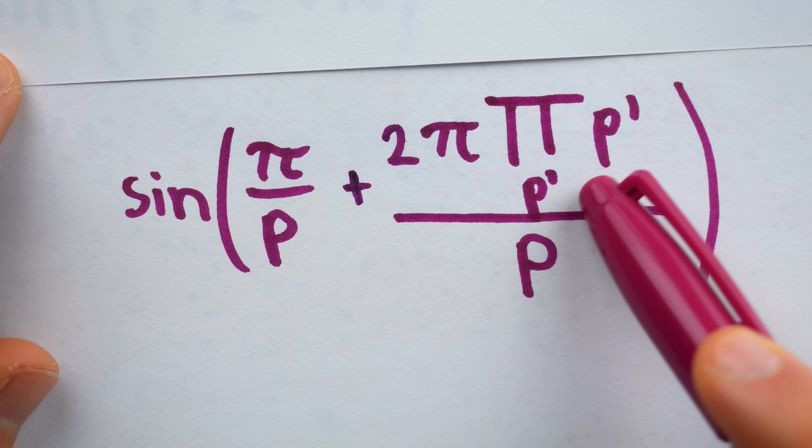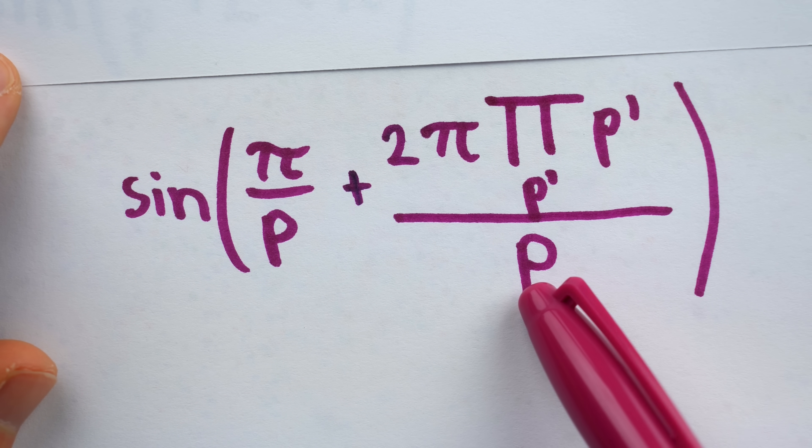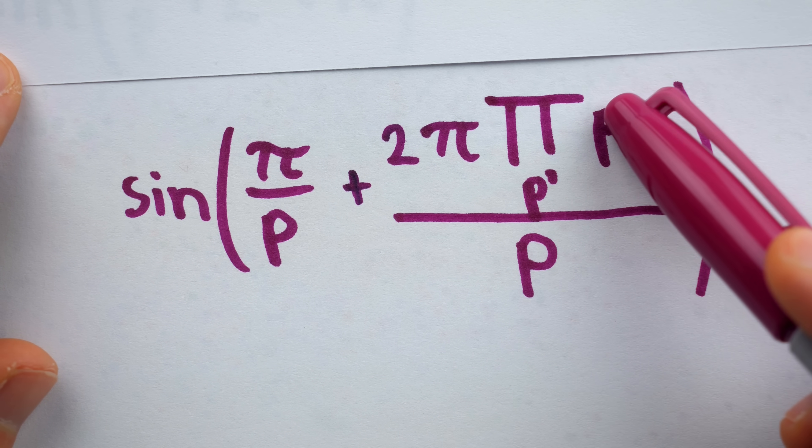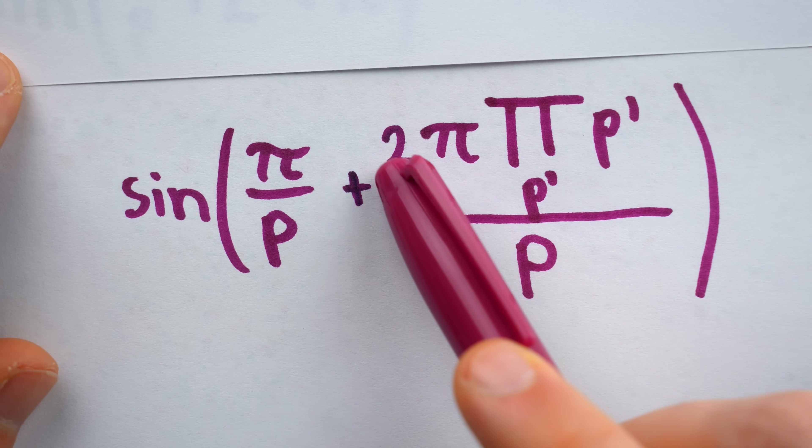Well, like we just said, this is the product of all prime numbers. So whatever prime number p is, it's somewhere in this product, hence those will cancel out and leave behind an integer multiple of 2 pi.